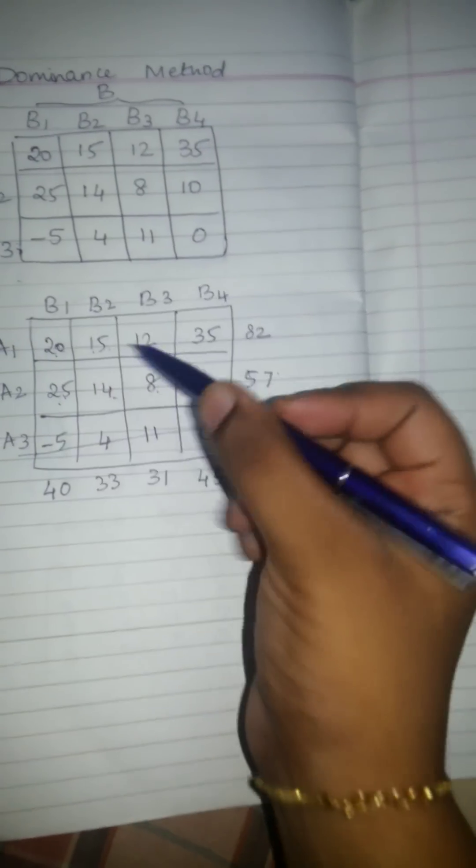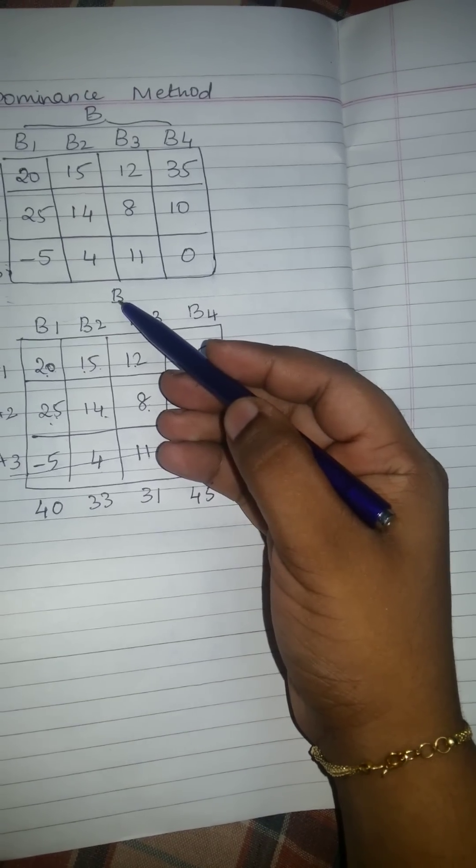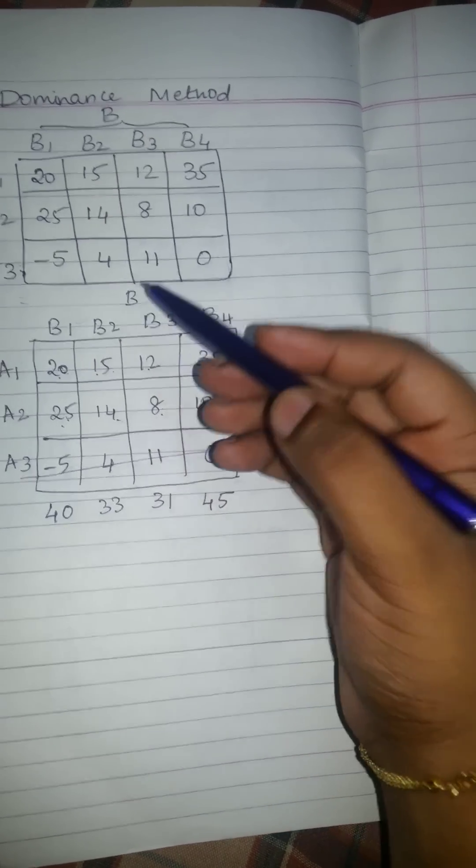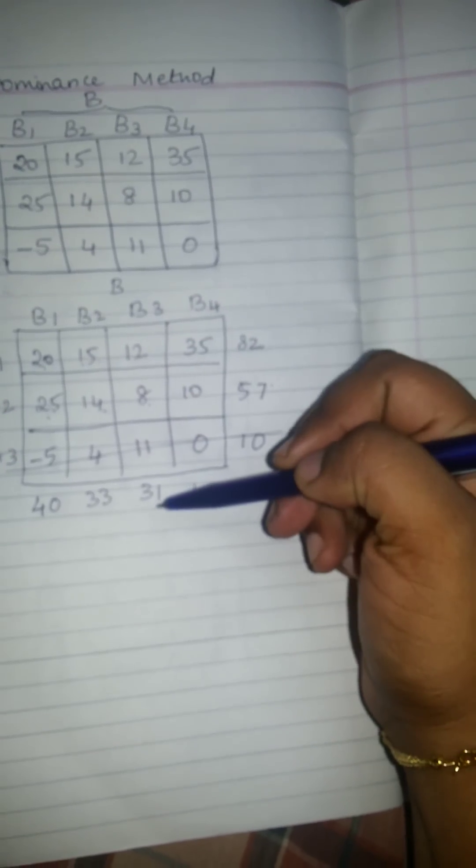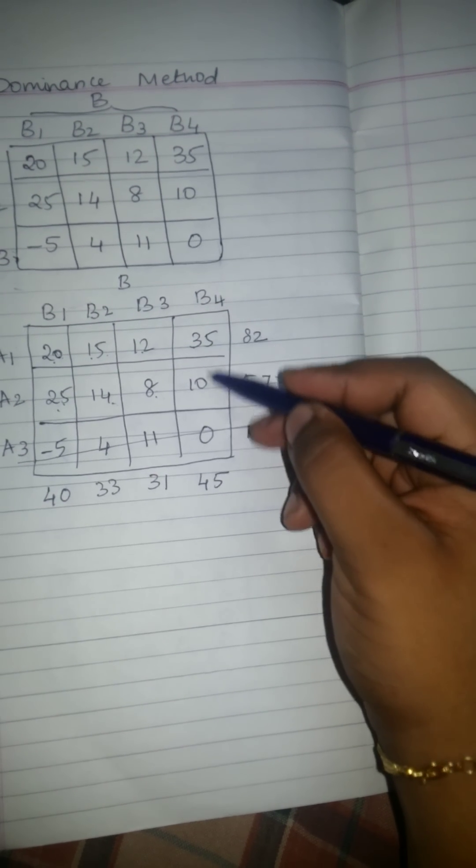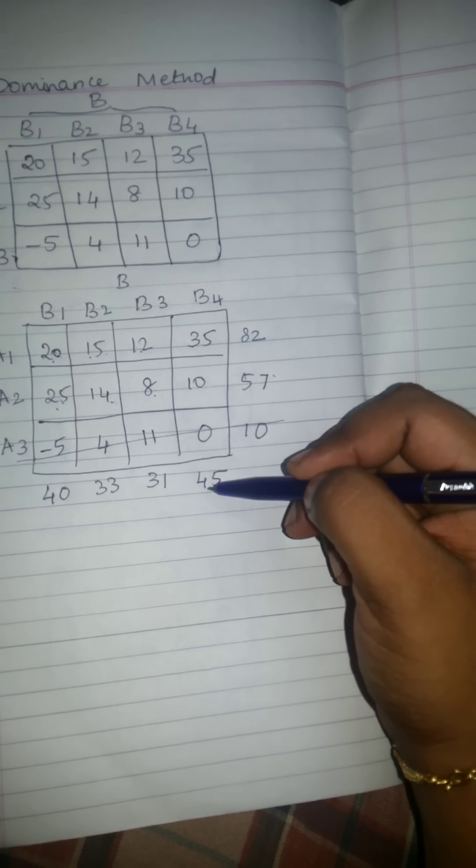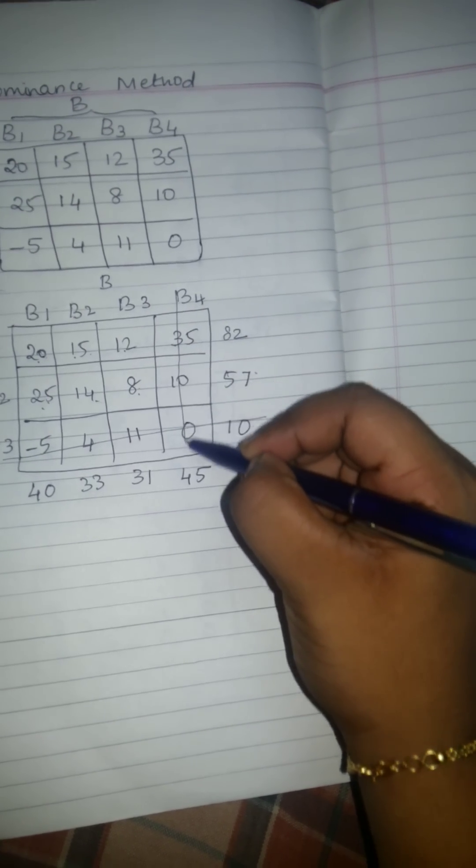Now after A's turn, next it is B's turn here. B should cancel out the largest number first, has to retain the least number at the end of the answer. Here the largest sum of the column is 45. So I am going to strike out this column.